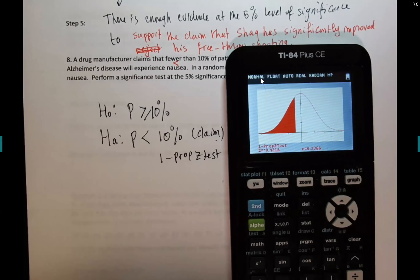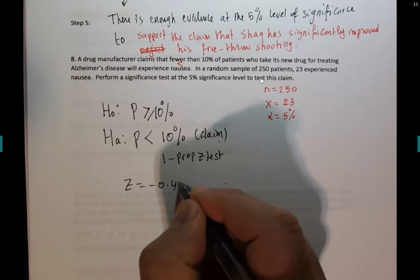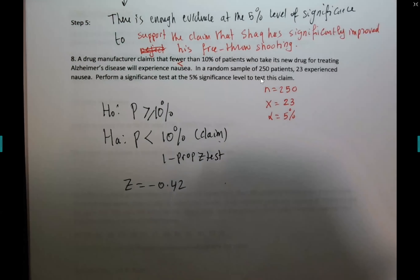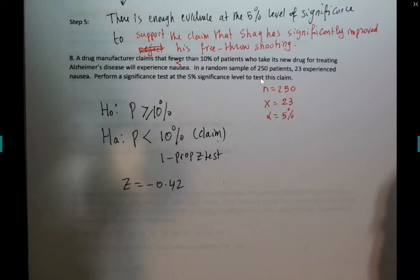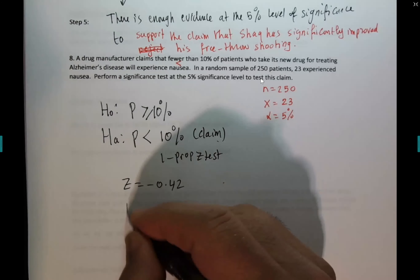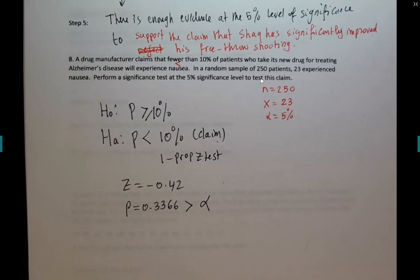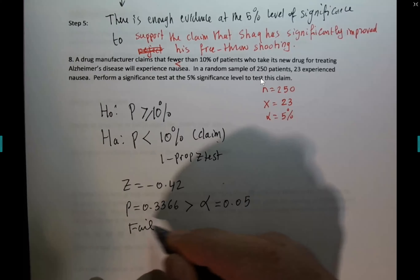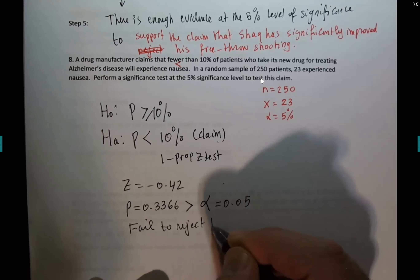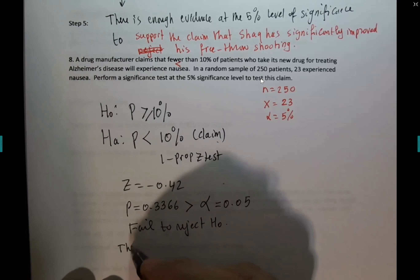z is negative 0.42 and the p-value is 0.3366. Redo these problems once we're done today or tomorrow, just to make sense of this — compare with my answers. The p-value of 0.3366 is of course bigger than alpha. When you see too much shading, that's going to be bigger than alpha for sure, since alpha will never exceed 10%. The decision is fail to reject H0.